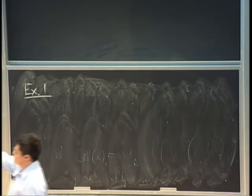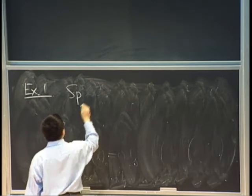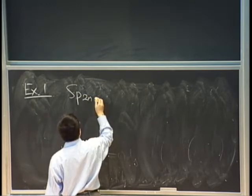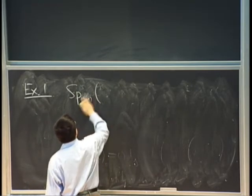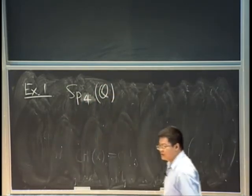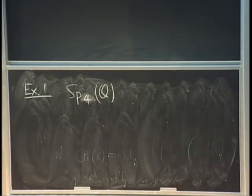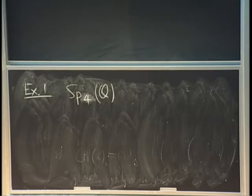Now let's start with Example 1. We have Sp_{4} — let me start with the more modest Sp_4. I'm writing down the Q-structure because all these things depend on the rational structure, since we're talking about rational parabolics. If you choose a different rational structure, the whole picture of rational parabolics changes. Sp_4 acts on the Siegel upper half-space H_2, which consists of symmetric 2×2 matrices with positive definite imaginary part.